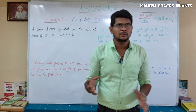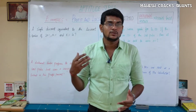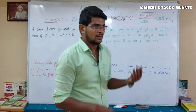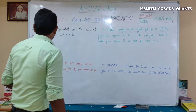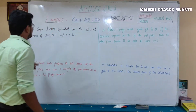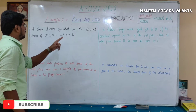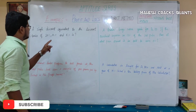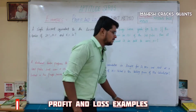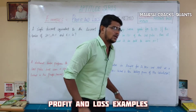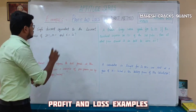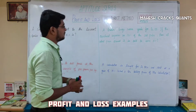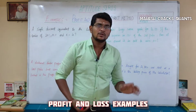This is Mayesh. We will talk about profit analysis and the example is a continuation. The first problem: find a single discount equal to the discount series of 20%, 10%, and 5%. A single discount equivalent to the discount series of 20%, 10%, and 5%.